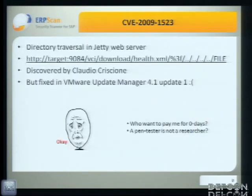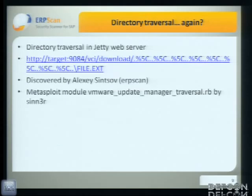The first thing we found in public sources was an old directory traversal, discovered by Claudio Crestoni. It's a classic directory traversal, but it was fixed in our version — so that's bad. However, Alexei Sinsov didn't trust any fix or patch, and after a few minutes he found another directory traversal almost in the same place.